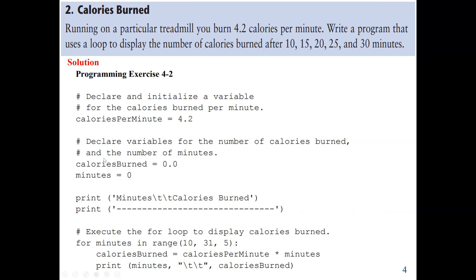Now we declare variables for the number of calories burned and also the number of minutes. So we have a variable named calorie burned and also minutes. We initialize both to zero to make sure there's no value. So next, we are going to execute the for loop to display the calories. So here, we are going to have our answers for 10, 15, 20, 25, and 30 minutes.